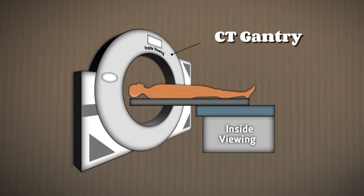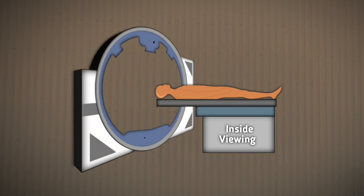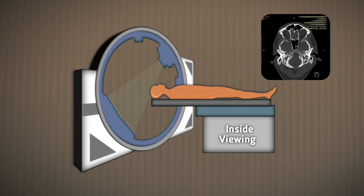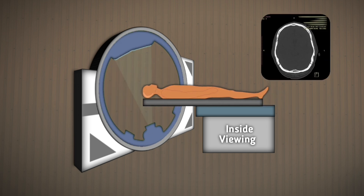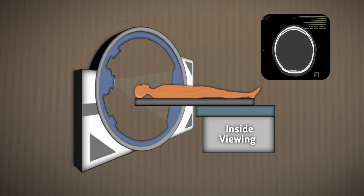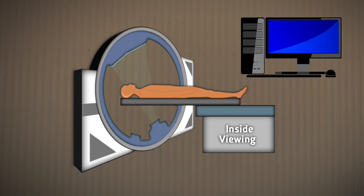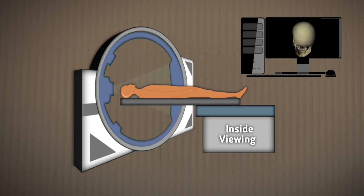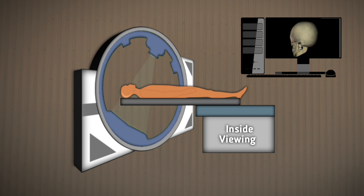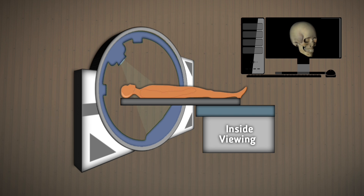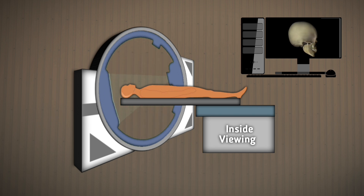Inside the machine, an x-ray tube and a detector array rotate around your body, taking hundreds of pictures from all angles. These images are then sent to a computer, which processes them to create a detailed 3D view of your bones, organs, and tissues. Now let's break it down further.